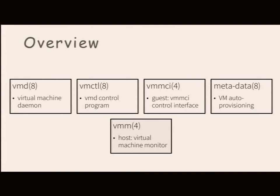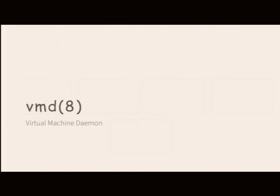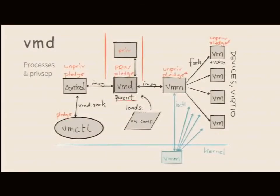Here's an overview of what I'm covering today: VMD, VMCTL, the control interface VMMCI, metadata — which is not in OpenBSD base but is useful — and the VMM kernel itself is out of scope. The virtual machine daemon consists of multiple processes. When you run VMD, it initially spawns three processes: control, pref, and VMM.